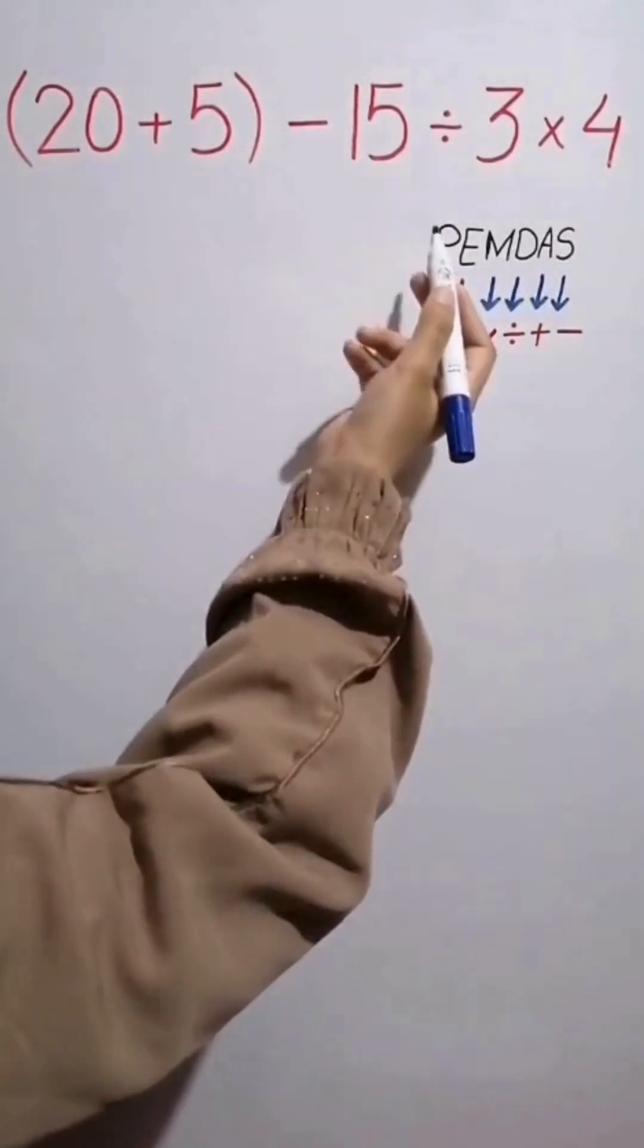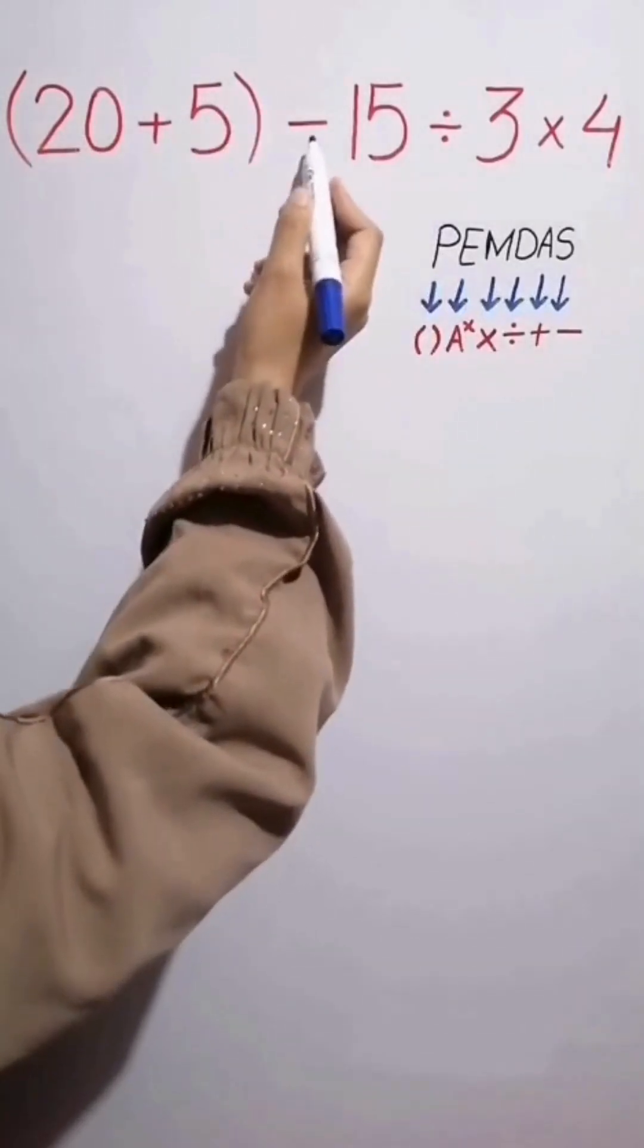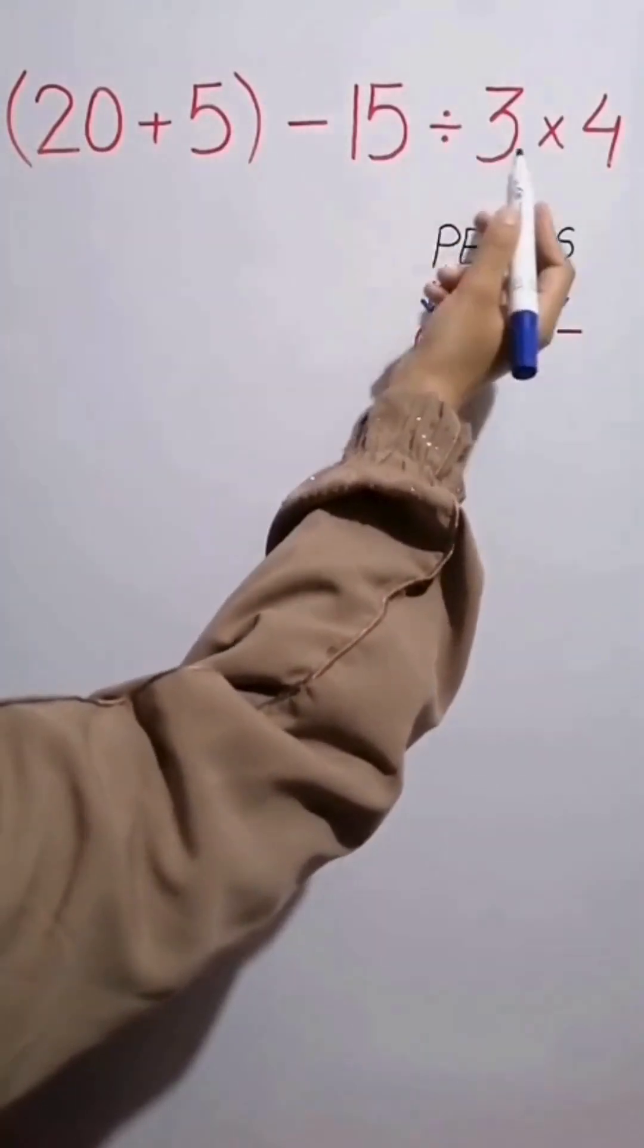As you can see on this screen, in this expression first we have a parenthesis, then a subtraction sign followed by a division, and finally a multiplication.